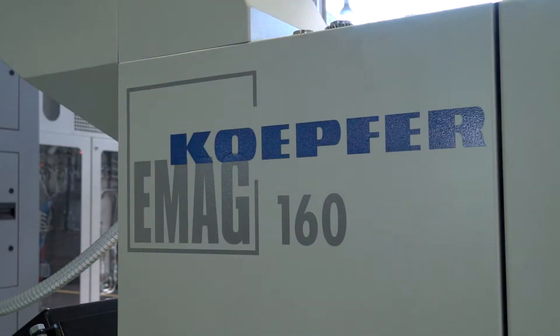This is the EMAG Kupfer 160 gear hobbing machine. What's the process we can see? Currently we are hobbing our planetary gear of an automotive transmission, doing pre-hobbing before gear grinding.